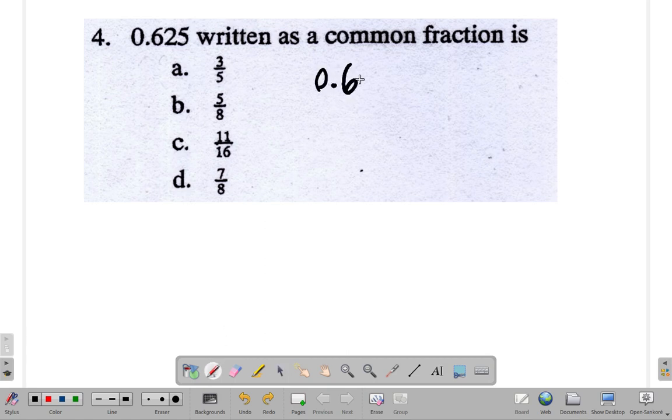0.625. Any number you write is the same as that number divided by 1. So it's 0.625 divided by 1. Now let's convert this directly to a fraction. This looks like a fraction but we don't want any point in it.